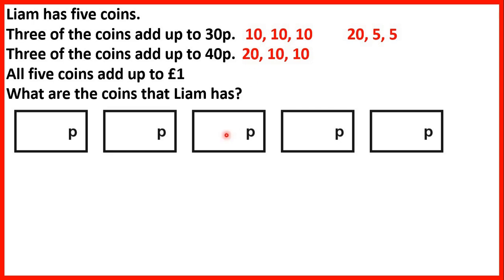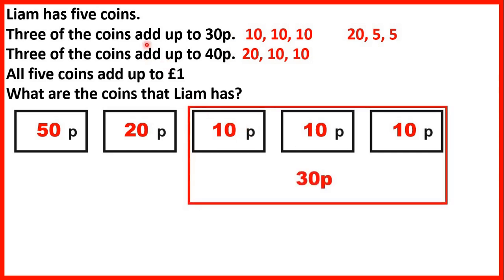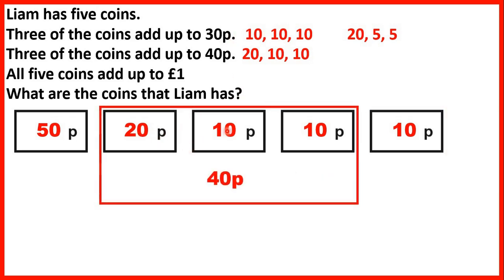So let's try: 20p, 10p, and 10p for the 40p group. Then we have 50p, 20p, 10p, 10p — that's 90p so far, and we need another 10p to make 1 pound. Now let's check: 3 of the coins — the three 10ps — add up to 30p. And the 3 coins 20p, 10p, 10p add up to 40p. So we have our answer: the coins are 50p, 20p, 10p, 10p, and 10p.